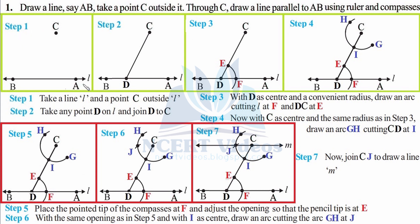Step one: draw a line AB and mark a point C within finite distance from this line. Step two: take any point D on line l and join DC. You can take D anywhere within the defined boundaries of line AB. We mark it as D and join it with the help of a ruler.